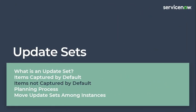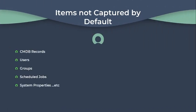The next is items that are not captured by default. Mostly, CMDB records are not captured in the update set. If we are creating any user or group in the instance, it cannot be captured in the update set, so we must create them in the other instances or import them from the lower instances if we need the users and groups in all instances. The same applies for scheduled jobs and system properties — these are also not captured in update sets by default. However, there are some items which we can capture forcefully in update sets.